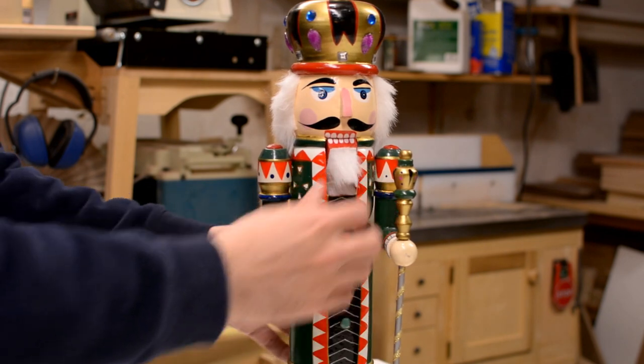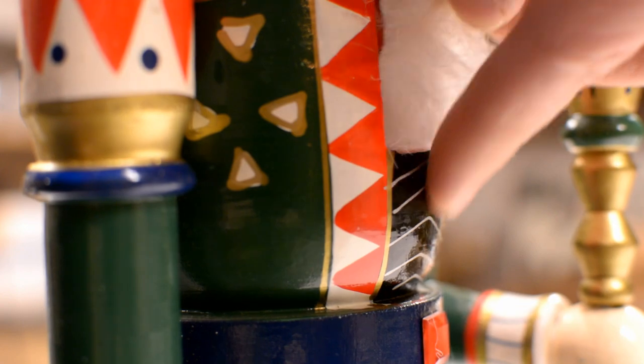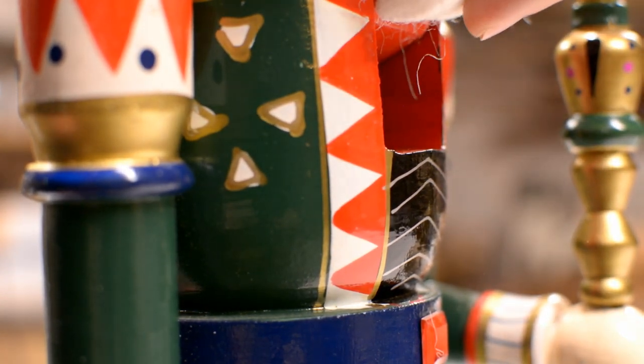The usual nutcracker movable jaw is inside a square mortise and gets covered by a beard or a piece of fabric, with the latter being kind of a cheesy way of hiding it.